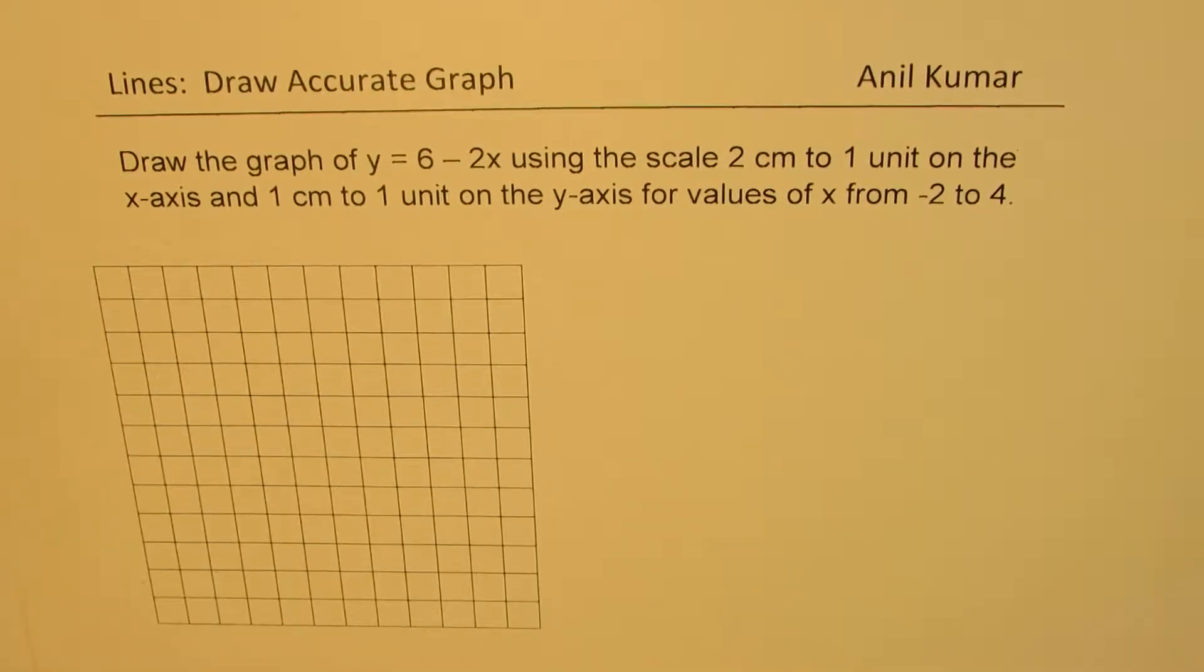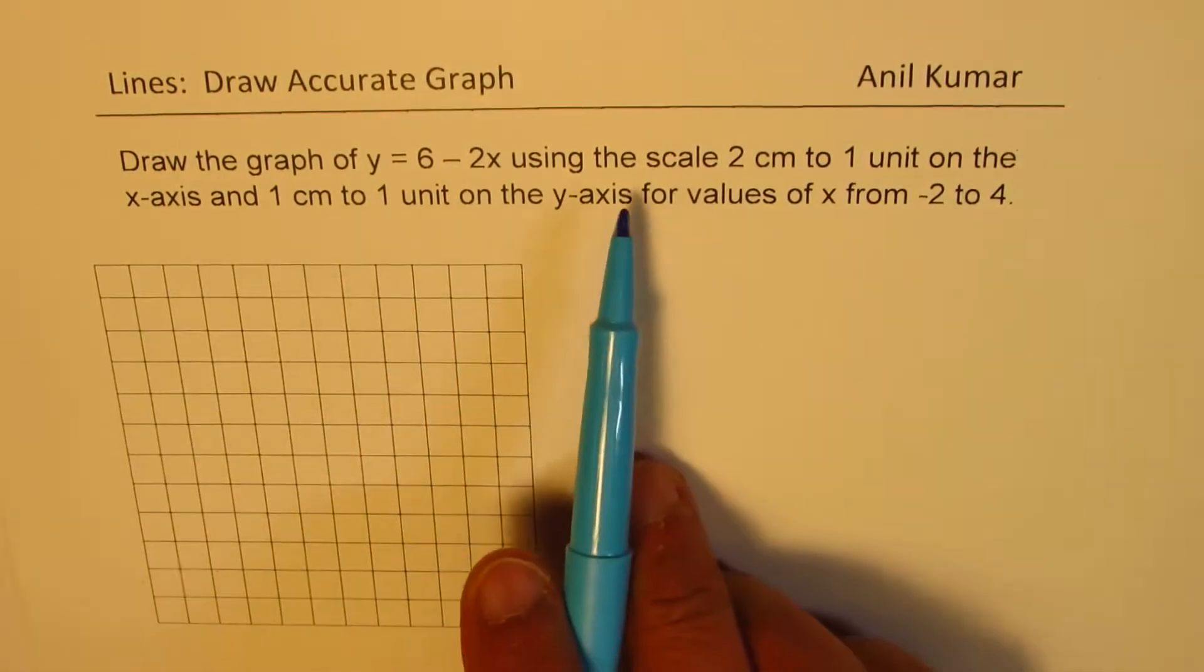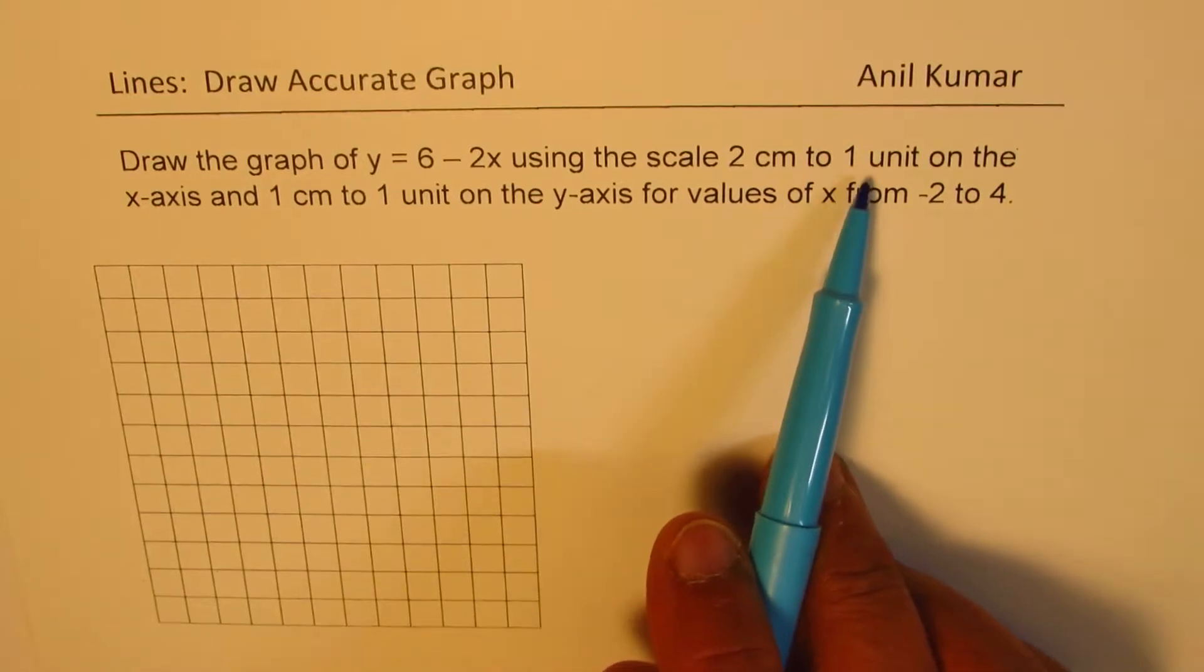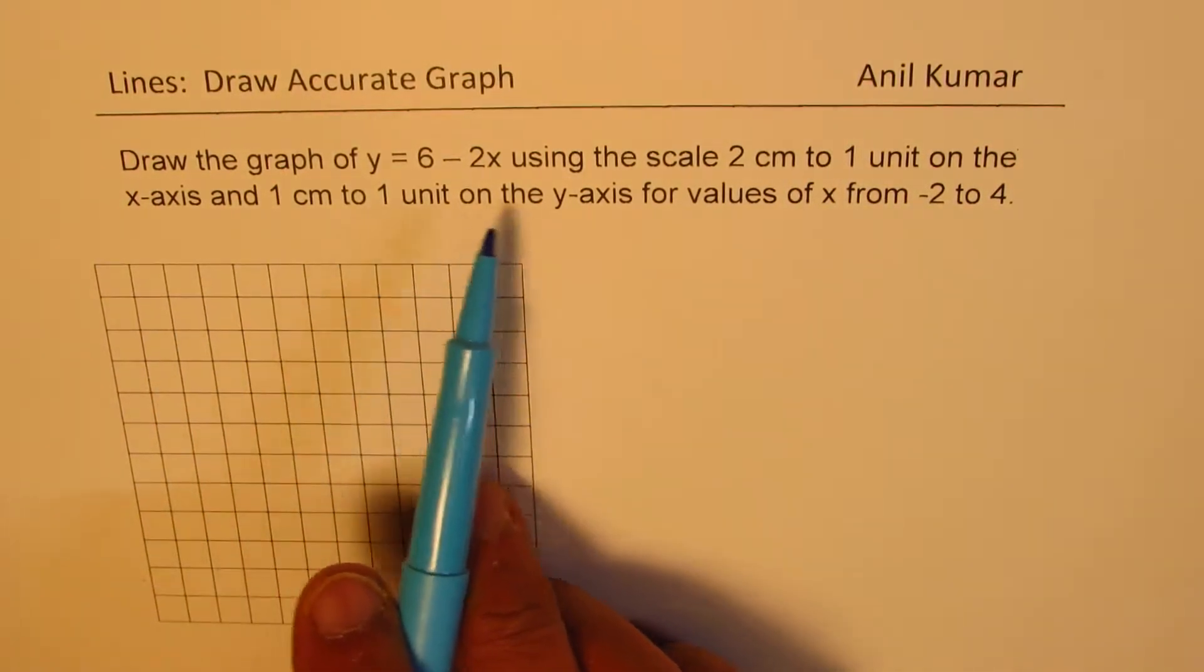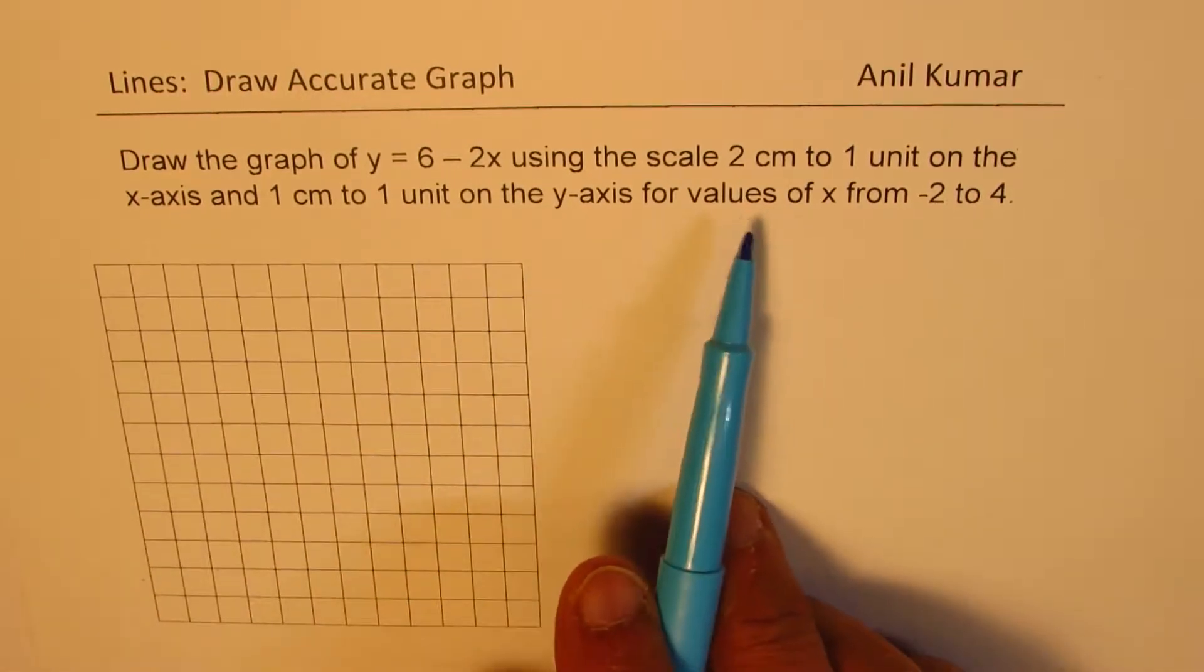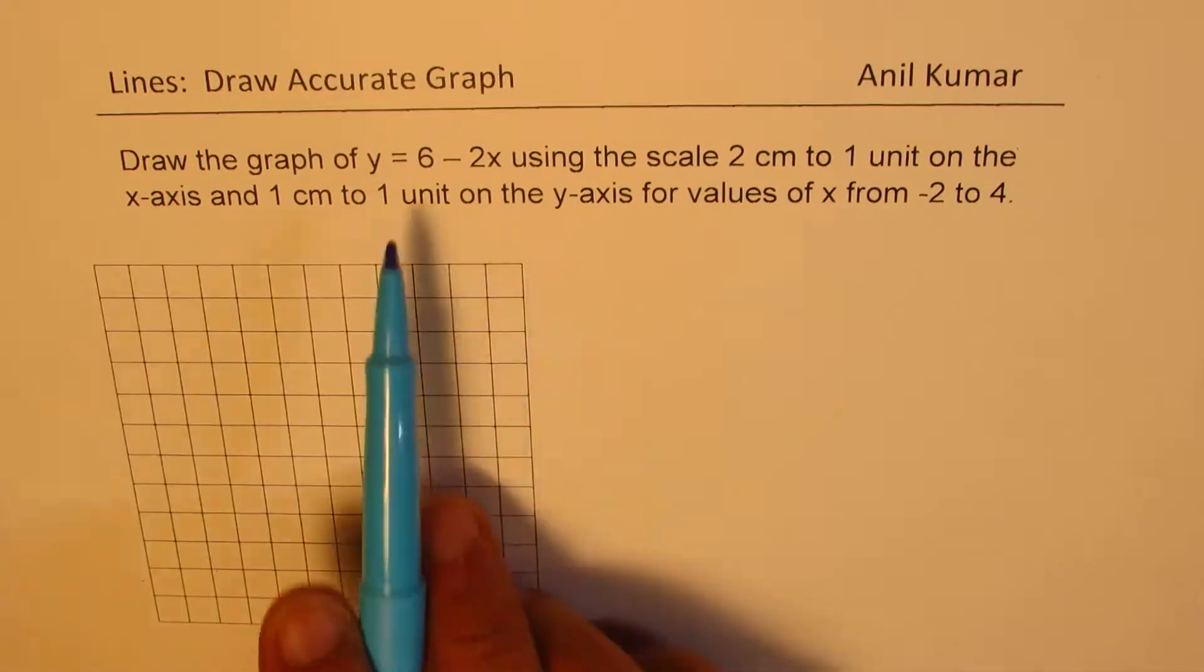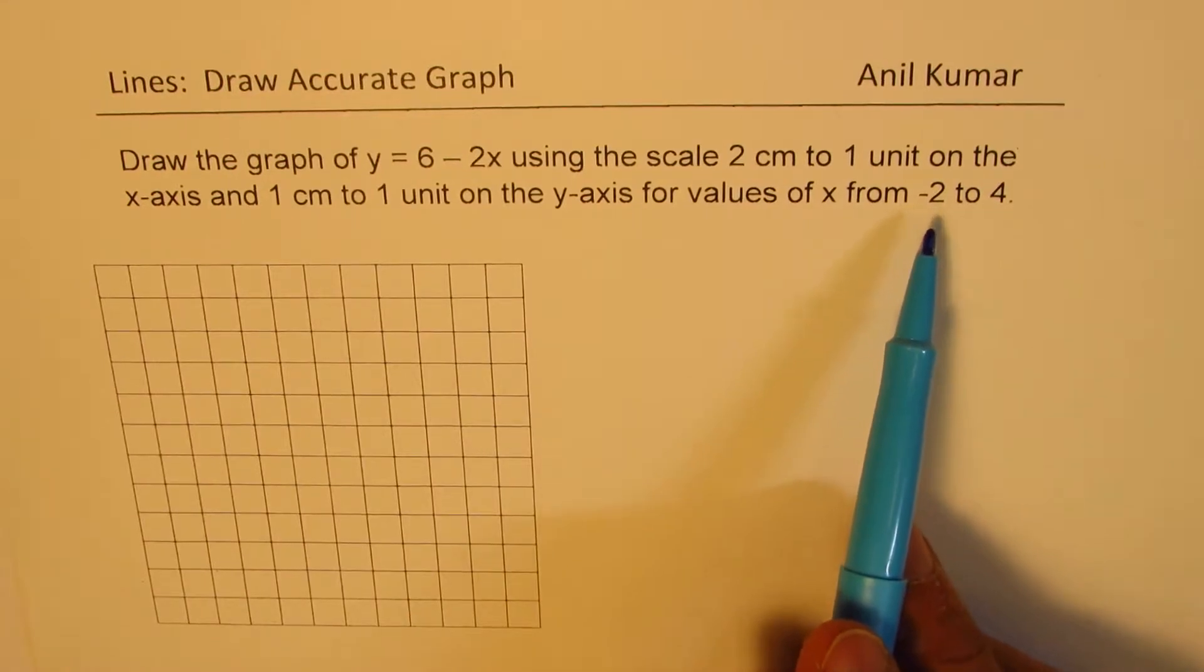The question here is, draw the graph of y equals 6 minus 2x using the scale 2 centimeter to 1 unit on the x-axis and 1 centimeter to 1 unit on the y-axis for given values of x from minus 2 to 4. So we are given the equation and the scale, also the values from which we need to use to sketch the graph.